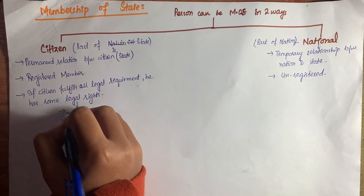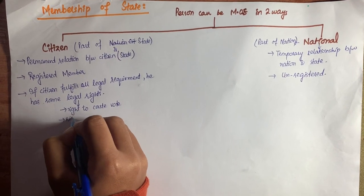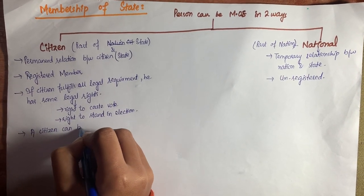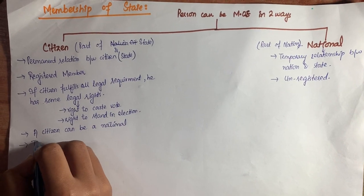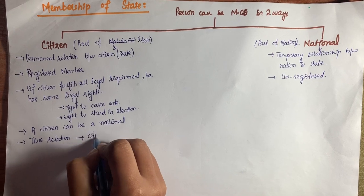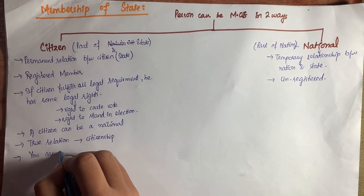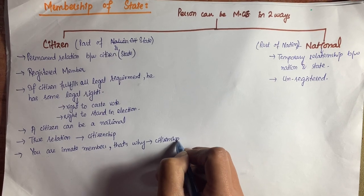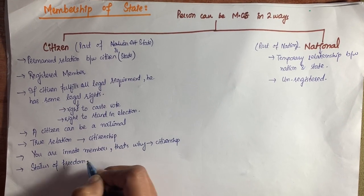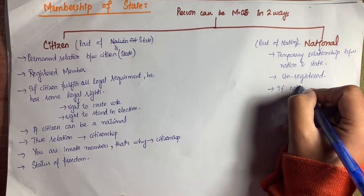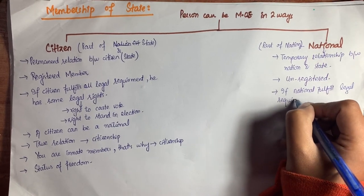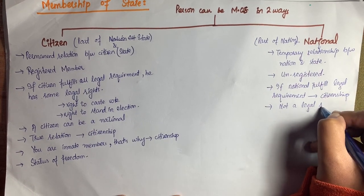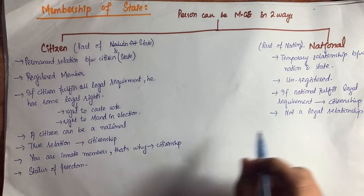If a citizen fulfills all legal requirements, they have legal rights, including the right to cast a vote and the right to stand in an election. A citizen can also be a national of the state. Citizenship is a true, permanent relationship with the state. It is a status of freedom along with many responsibilities. If a national fulfills all legal requirements given by the state, they can obtain citizenship. Nationality, however, is not a legal relationship with the state.